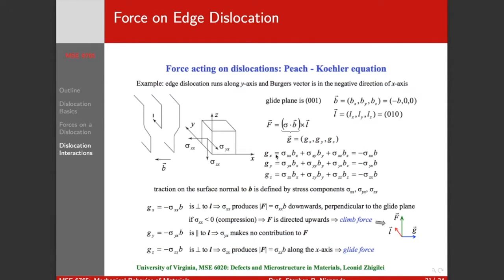Shear in the yx plane doesn't cause any force on our dislocation line. The normal force in the x direction, that's going to cause an upward force on our dislocation line, but that's out of the glide plane. That's our climb force, and that climb force is going to bias our thermodynamic potentials and make it easier for vacancies to jump in or out and move that plane up or down.